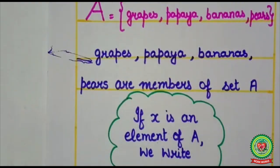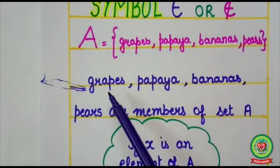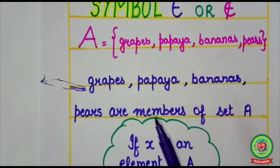Let's understand with one more example. Here A is grapes, papaya, bananas, pears. Now grapes, papaya, bananas, pears, these are the members of set A.